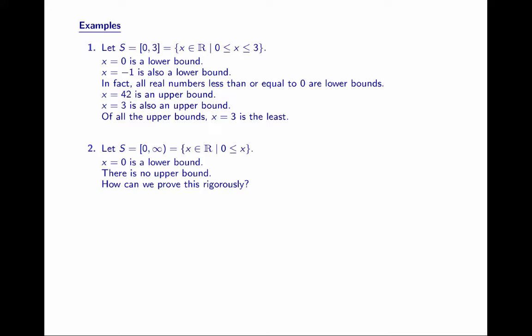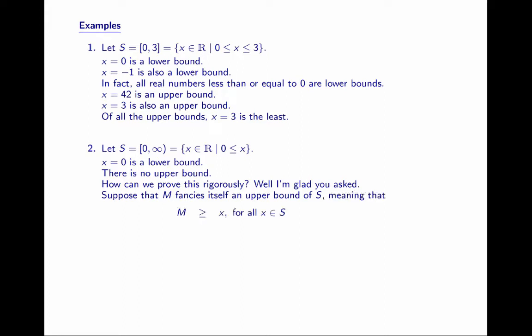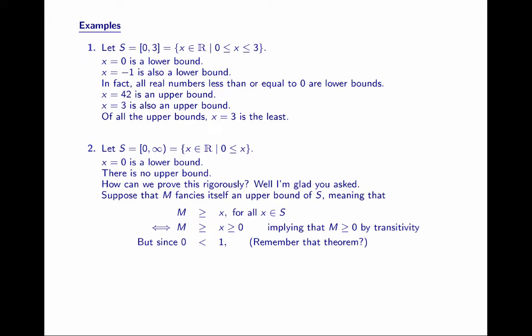How can we prove this rigorously? Suppose that m fancies itself an upper bound of S. That means m purports to be greater than or equal to x for all x in my set. But if m is greater than or equal to x, and x is greater than or equal to 0 by virtue of being in the set, then by transitivity of the greater than inequality, m is also greater than or equal to 0. Since m is greater than or equal to 0, it is, by definition, in the set.